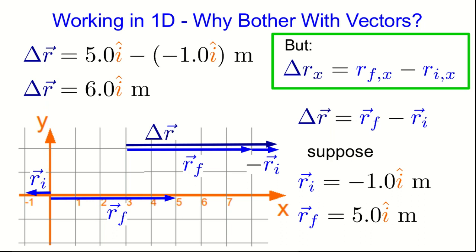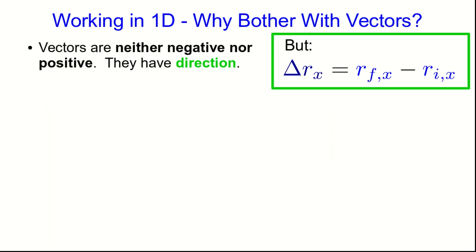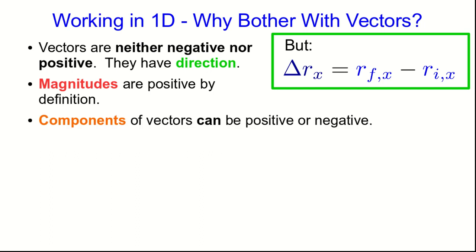So, even though we're in one dimension, we should still pay attention to the difference between magnitudes of vectors and their components. In particular, notice, vectors are neither negative nor positive. They have direction, and that's different from being negative or positive. Magnitudes, though, are always positive by definition, whereas components of vectors can be positive or negative. Keeping this straight will save you a lot of confusion later on.